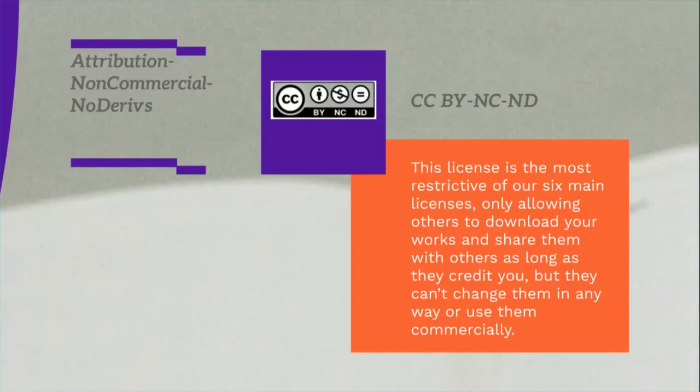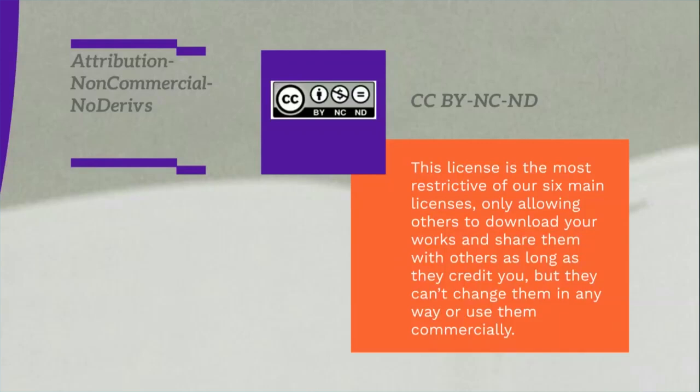Next is CC BY-NC-ND. This license is the most restrictive of the 6 main licenses, only allowing others to download your works and share them with others as long as they credit you, but they can't change them in any way or use them commercially.